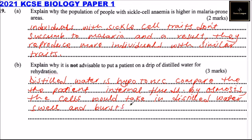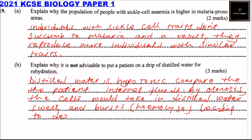This is what we call haemolysis, leading to death or more damage. That's why it's not advisable to put a patient on a drip of distilled water for rehydration, because they would die or sustain more damage to their body.